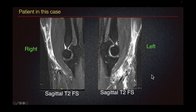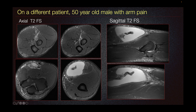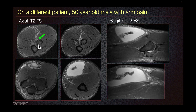To visualize this, this is a different patient — a 50-year-old male with arm pain. In this patient, we have axial T2 fat-sat imaging at the level of the radial tuberosity. In this location, we should expect a hypointense or dark line inserting at the radial tuberosity, which is the biceps tendon.